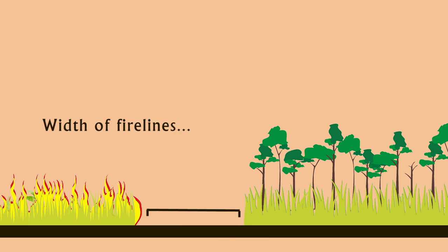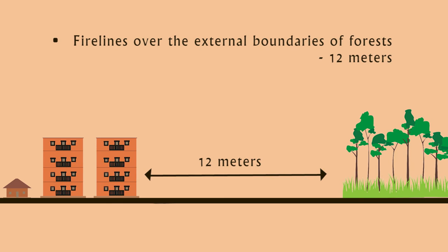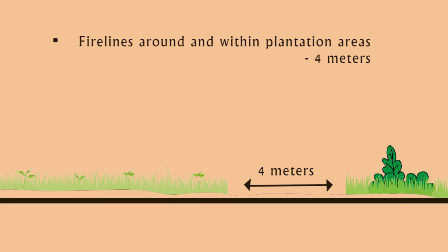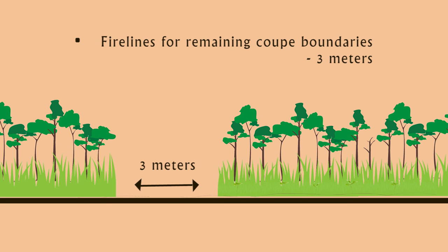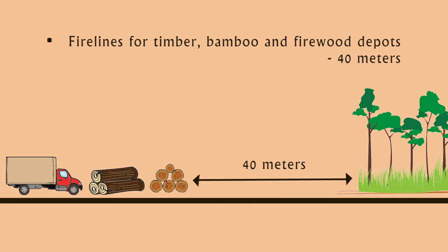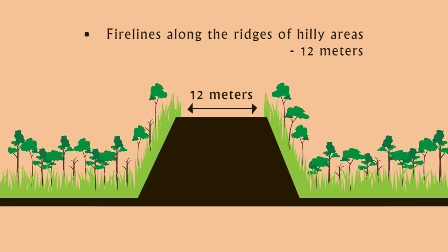Width of fire lines: Fire lines over the external boundaries of forests — 12 meters. Fire lines protecting naturally regenerated areas — 6 meters. Fire lines around and within plantation areas — 4 meters. For remaining coop boundaries — 3 meters. On both sides of roads — 12 meters. For timber, bamboo, and firewood depots — 40 meters. Fire lines along the ridges of hilly areas — 12 meters.